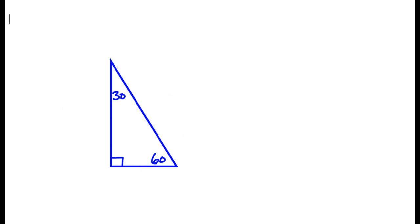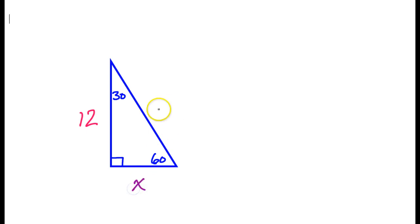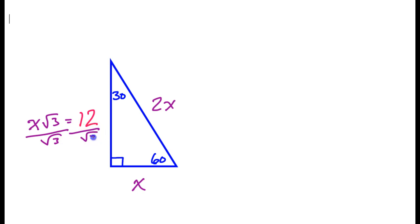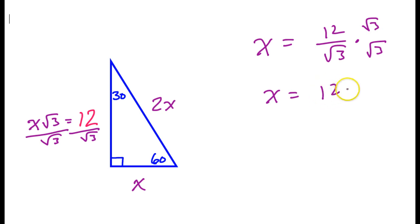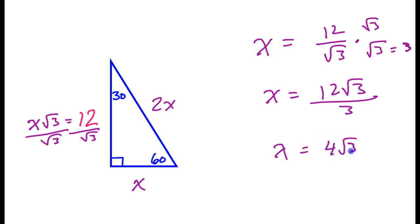The only thing that is slightly tricky is when they give you the long leg and it does not have a radical 3 on it. For example, if they told us that the long leg was 12 and we're supposed to find the other two sides. Set up the pattern: short leg is x, the hypotenuse is 2x, and the long leg is x radical 3. Make an equation: x radical 3 equals 12. Dividing both sides by radical 3 gives x equals 12 over radical 3. Rationalize the denominator by multiplying top and bottom by radical 3, giving 12 radical 3 over 3. Radical 3 times radical 3 is 3, and 12 divided by 3 is 4. So that gives 4 radical 3 for the short leg.